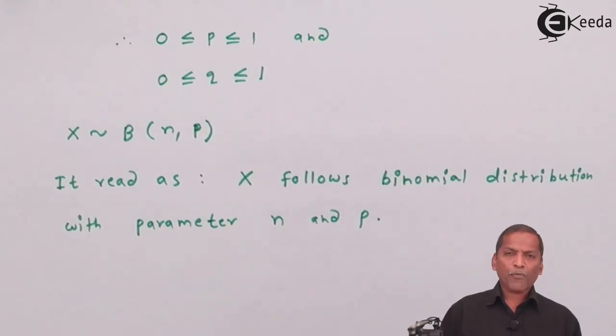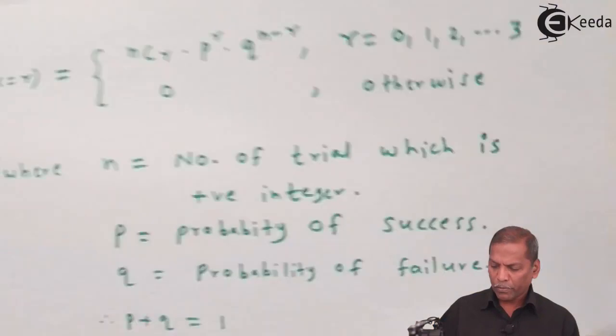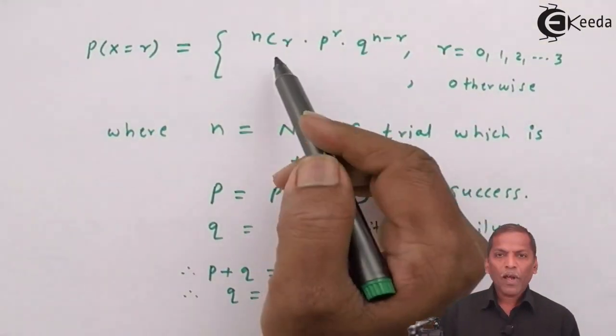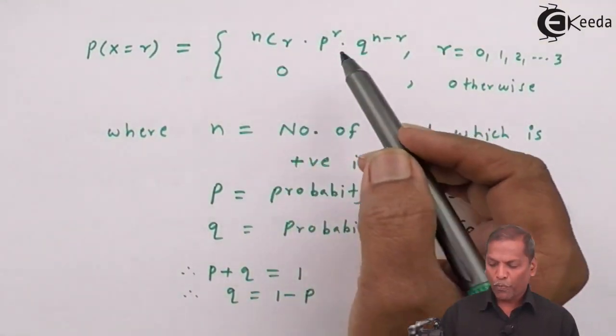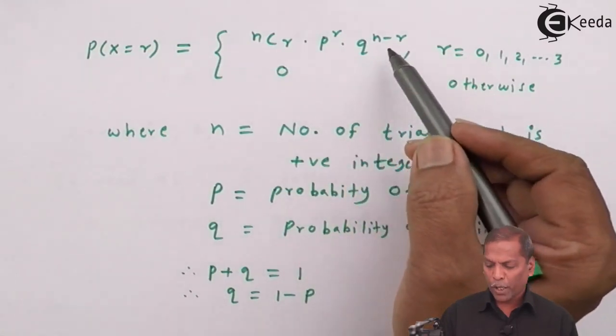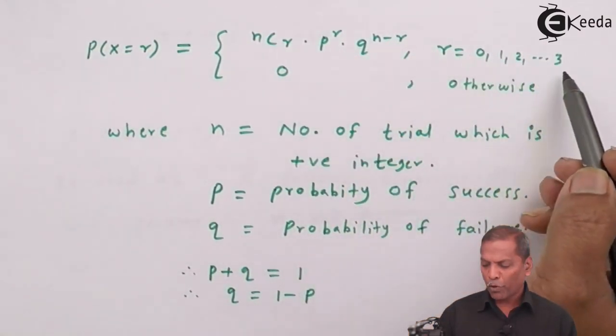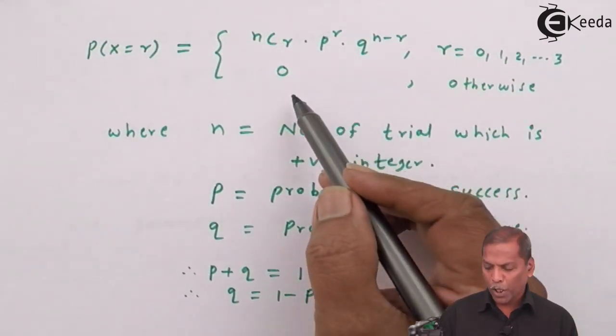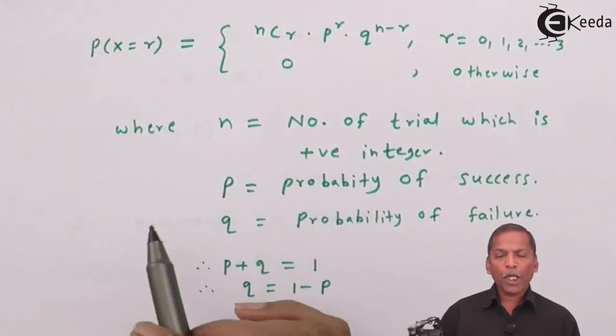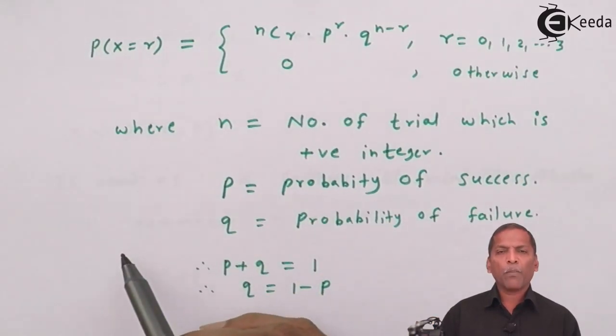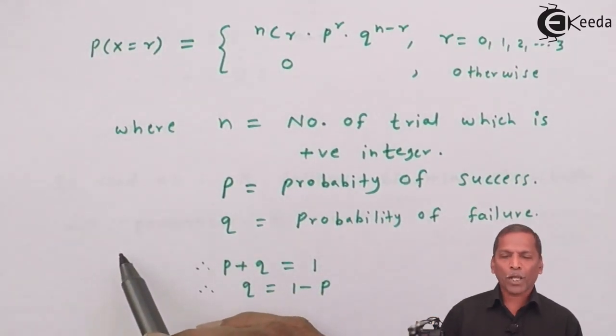So by using this formula that probability X is equal to r equals nCr into p raise r into q raise n minus r, r takes value from 0, 1, 2, 3 and is equal to 0 otherwise. By using this formula, we can solve many problems which are based on binomial distribution.